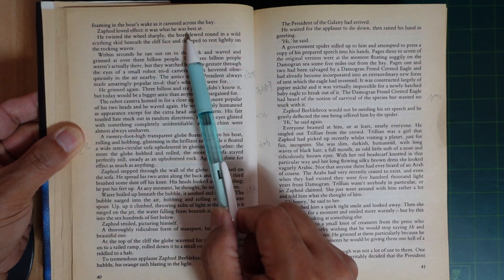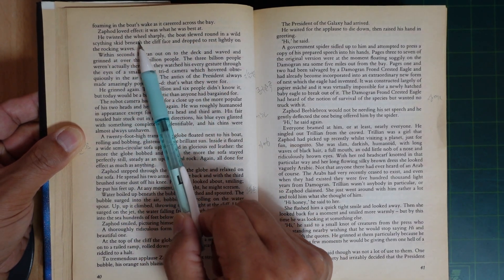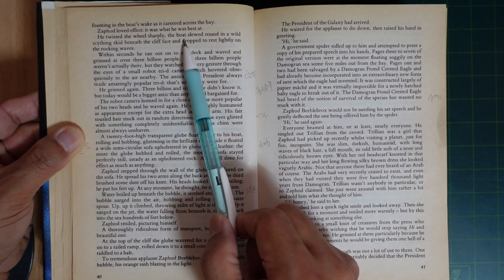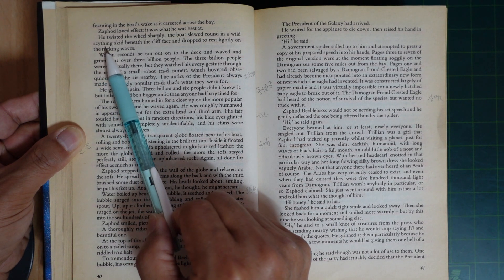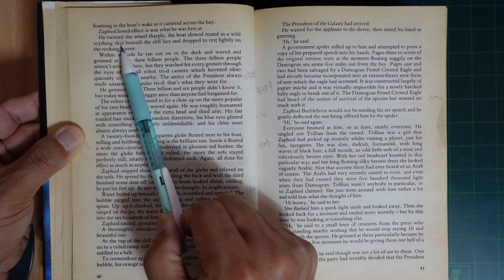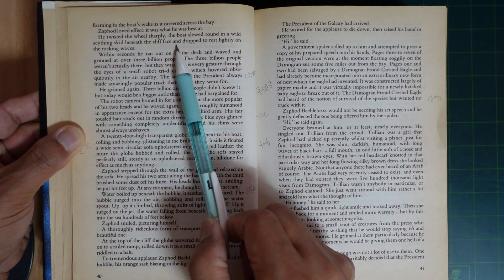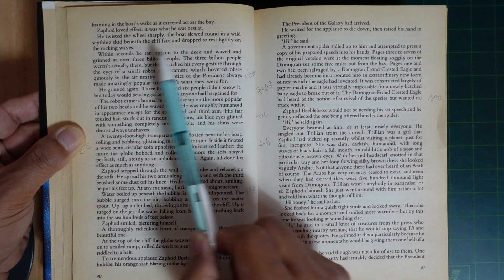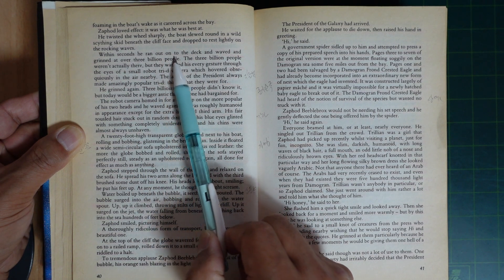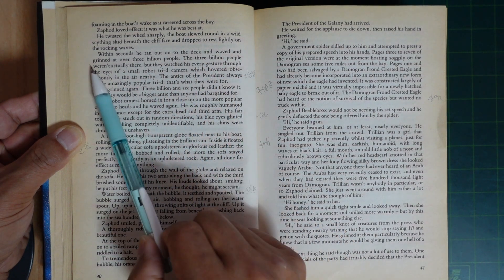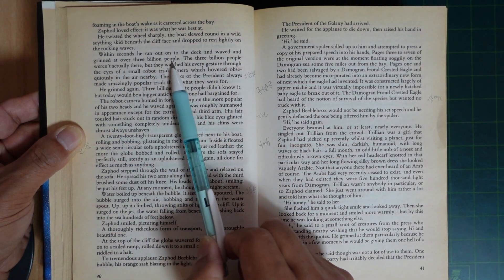It was what he was best at. He twisted and felt it sharply. The boat slewed round in a wild skidding, skidded beneath the cliff face and dropped lightly on the rock ledges. Within seconds, he ran out on the deck and waved and grinned at three billion people.